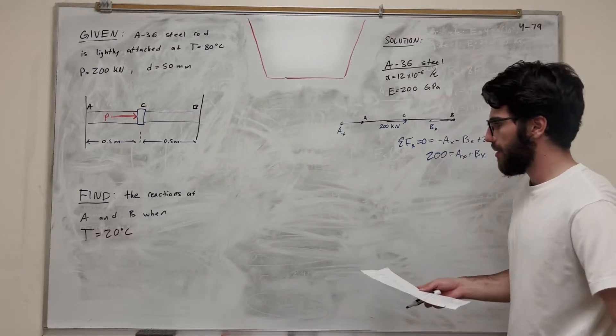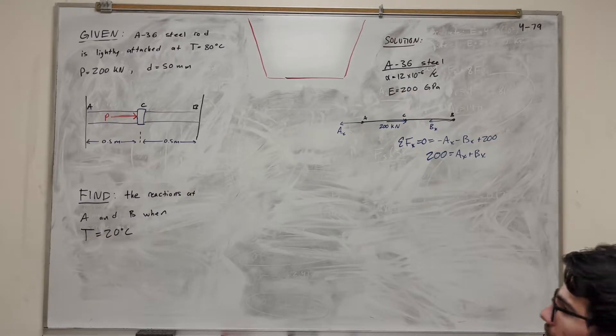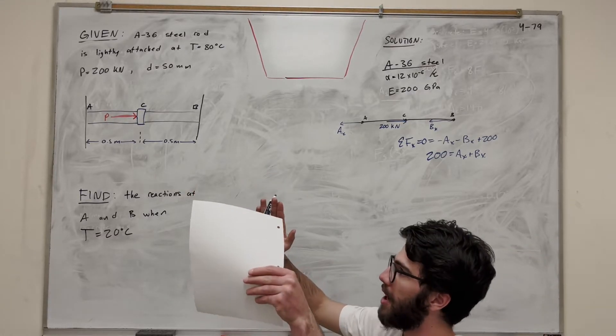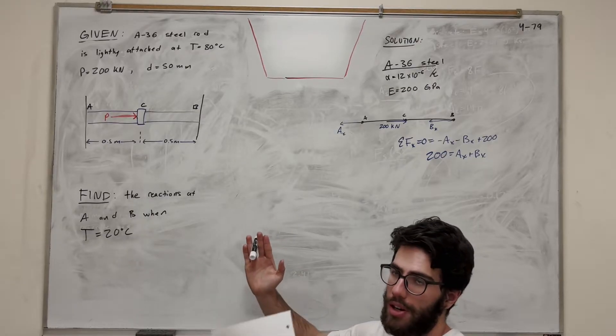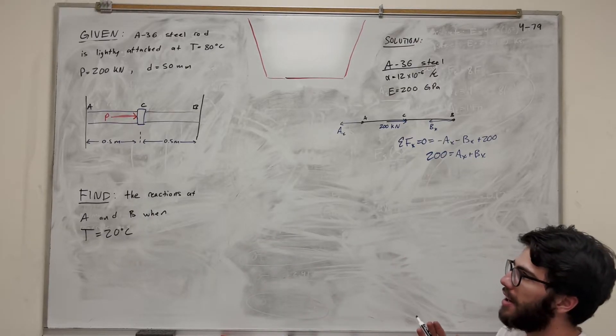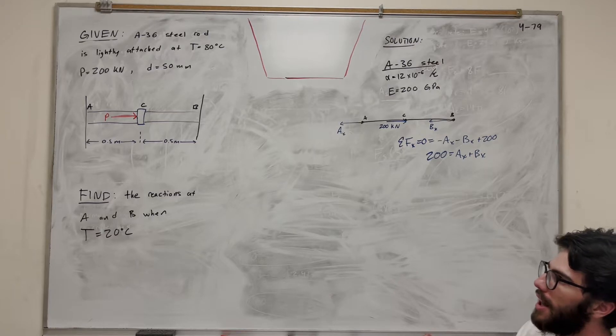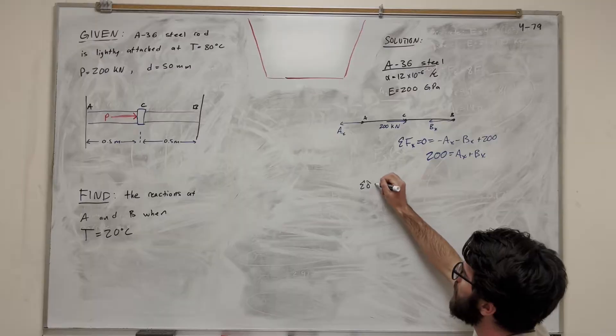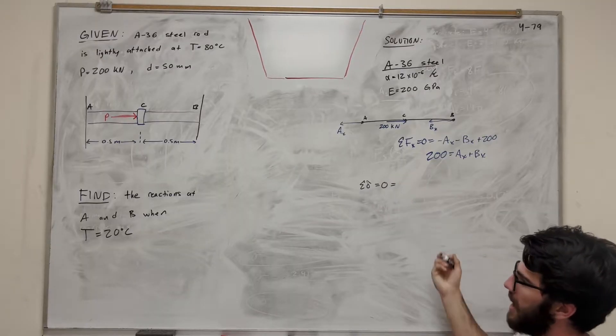Now to do that, we're going to need to do our displacement equation. So what do we know about this thing going on here? Well, we're locked in at A and B, so we're compressed against, and we can't expand outward, or we can't expand inward, right? So that means that our displacement is going to be equal to zero, right? Our total displacements, sum of the displacements, can be equal to zero. But we still need to add them up.